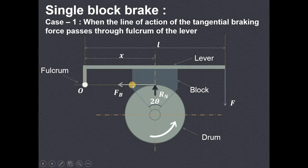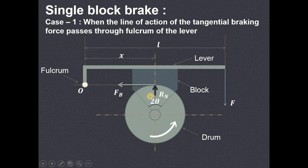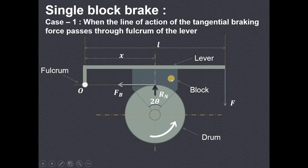This is the tangential force which is acting on this lever or on this block. X is the distance, and L is the distance of this particular applied force from the fulcrum O. The force components are also shown here — this is the force acting in the downward direction, which is the force applied by a person so that he can press this block or shoe against this rotating drum.